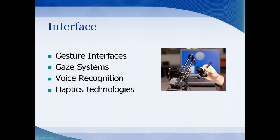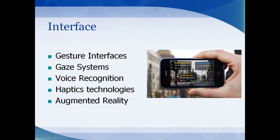Haptics technology, or touch-sensitive interfaces, lets you touch a digital object. Augmented reality is where the user's view has a computer-generated image overlaid on the real world.